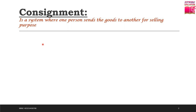You might think this is the same as a wholesaler giving goods to a retail shop. No, this is not the same. In that case, the retailer buys goods from the wholesaler at a discounted price and sells to consumers at higher prices, earning profit from the difference. But in consignment, the second person does not buy the goods - the actual owner sends goods to that person's location, they sell them, and from the revenue generated through selling, they deduct their commission and transfer the remaining amount to the actual owner of the goods.